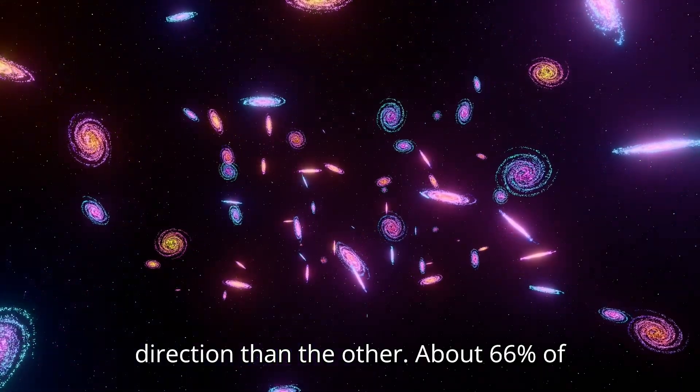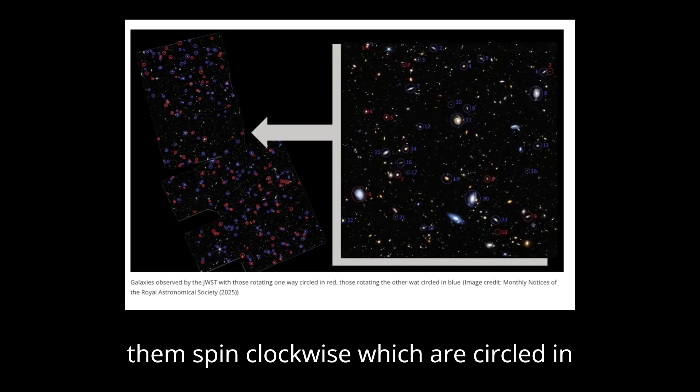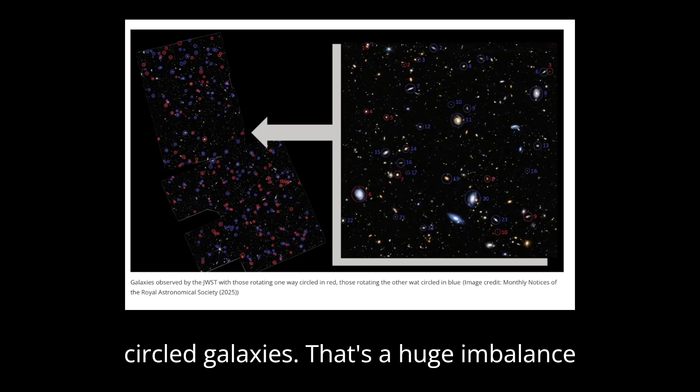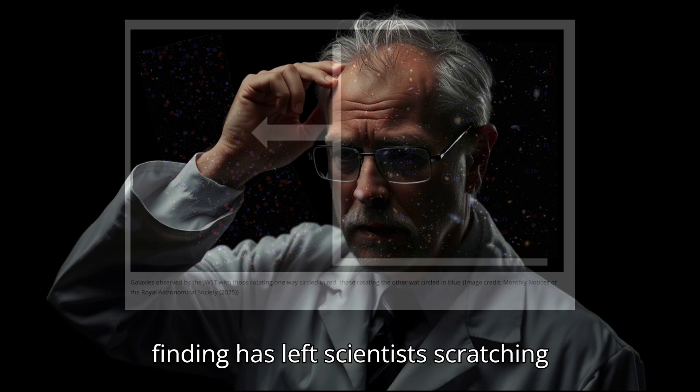About 66% of them spin clockwise, which are circled in red, while only 33% spin counterclockwise, meaning the blue circled galaxies. That's a huge imbalance, and scientists don't know why. This finding has left scientists scratching their heads.